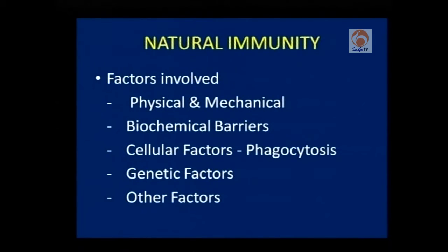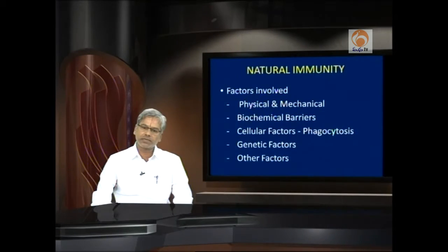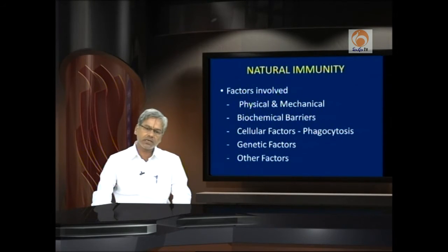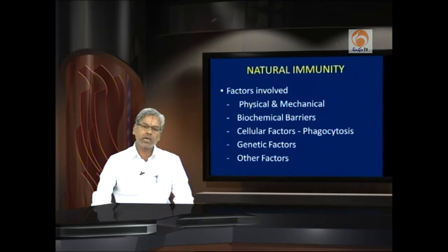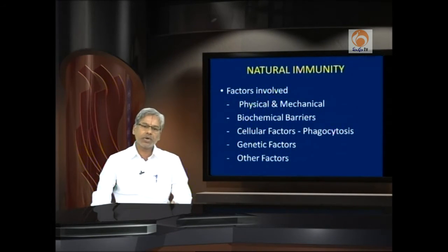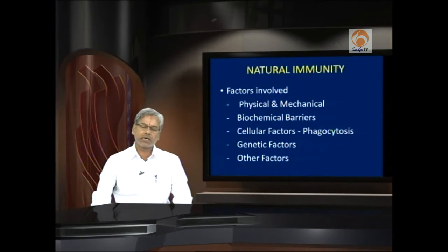Another factor is the cellular factor set, which is basically phagocytosis — cell eating, as we call it generally. A number of microphages and macrophages are involved: microphages are polymorphonuclear leukocytes while macrophages are monomorphonuclear leukocytes. Natural killer cells are also involved in phagocytosis. Phagocytosis is a three-step process: chemotaxis is effected first, where phagocytes are attracted toward the pathogen; then they attach to the pathogen; and then lysosomal activity causes destruction.